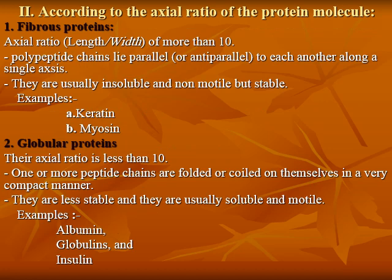According to axial ratio, proteins can be divided into fibrous and globular proteins. Fibrous proteins have an axial ratio (length over width) of more than 10; examples include keratin and myosin. Globular proteins have an axial ratio of less than 10; examples include albumin, globulin, and insulin.